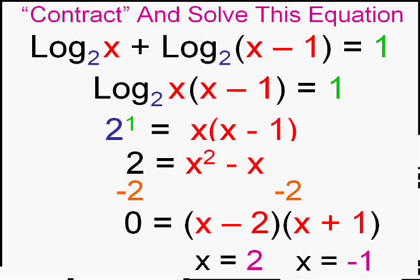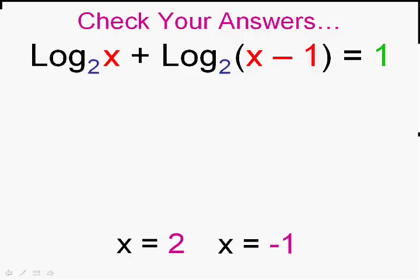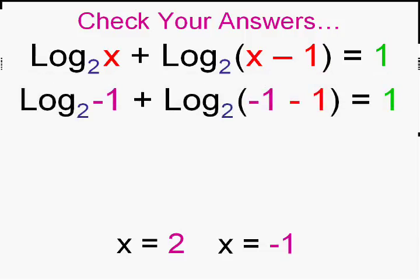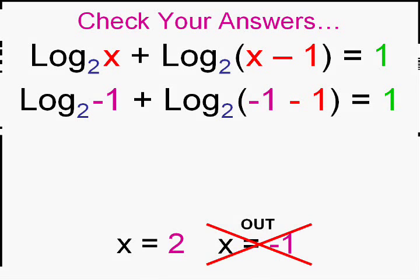So we have two possible answers because we need to plug these in—we're not sure they work. Let's start with negative 1. If you put in negative 1 for x, you come up against a wall right away because, remember the rules of logs: you can't take the log of a negative number, so that has to be out.